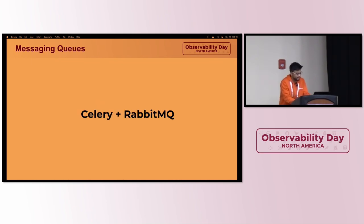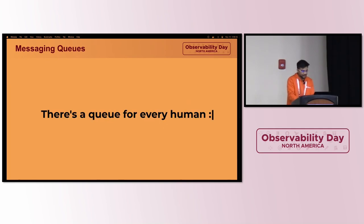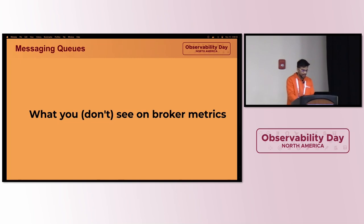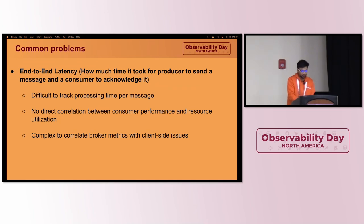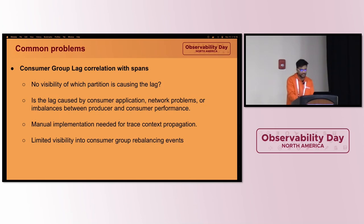Some other queues — for example, RabbitMQ or Celery — follow the same pattern where there is some queue inside a given broker or node. From RabbitMQ to Strimzi, there are a bunch of queues that people are using in production. What you don't see in broker metrics, specifically in Kafka, is partition-level visibility, end-to-end latency for producer and consumer messages, and you get consumer group lag but with no way to correlate it natively with consumer and producer spans.